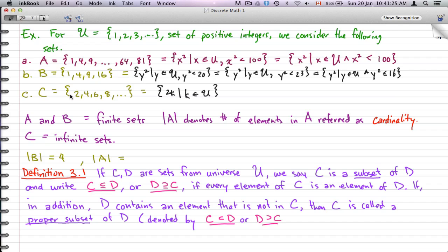For example, in C, we have infinite sets because it keeps on going. So we can't count. For B, the cardinality is 4 because there are 4 members. For A, it's 9 because the square of these elements are from 1² to 9², which is 81. So there are 9 members in A.